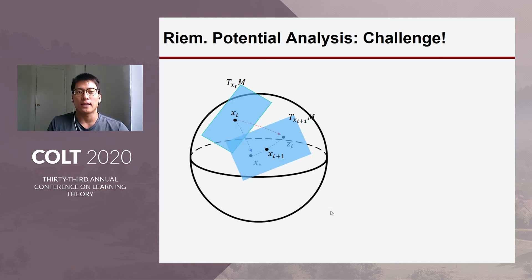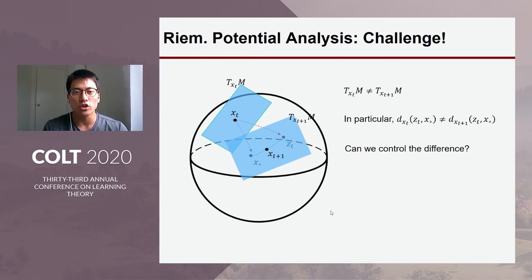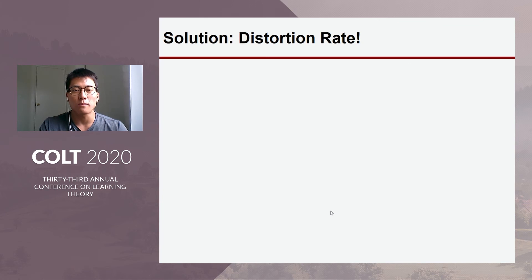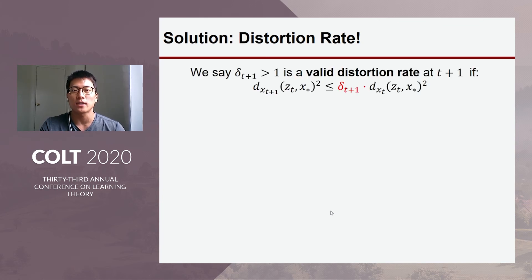So, but the challenge here is that since it's non-linear metric space, the metric varies across points. So, there's a distortion in metric between the two across the two different points. So, we need to control the so-called metric distortion to be able to carry out a potential function analysis. So, to make it formal, we define this distortion rate. We call δ_{t+1} is a valid distortion rate if it satisfies this inequality, turns out this exactly captures what we need and we can carry out a potential function analysis assuming the existence of a valid distortion rate.